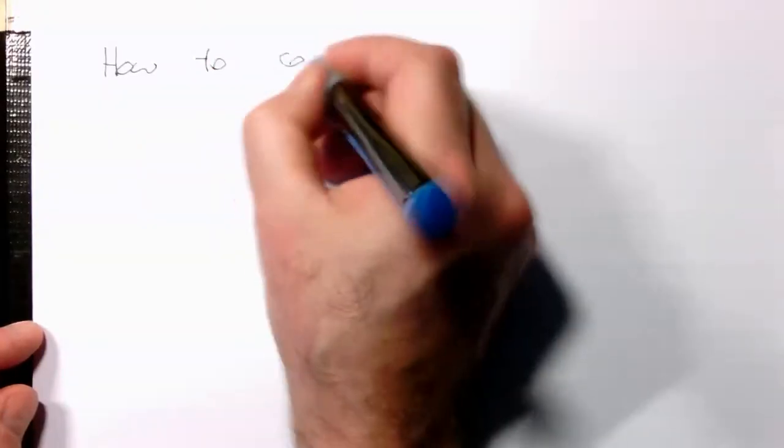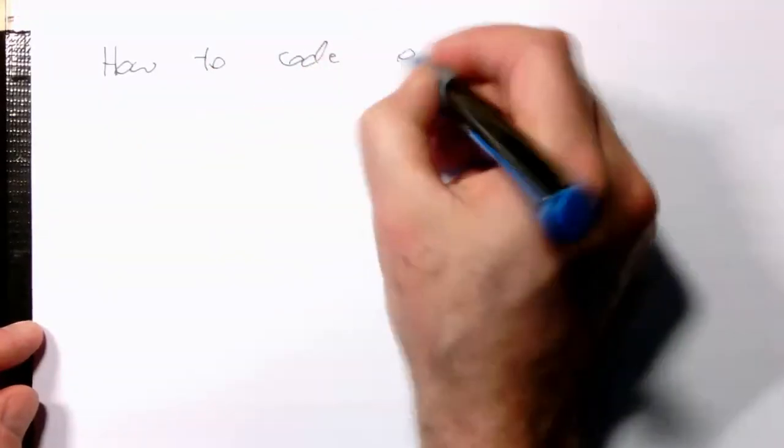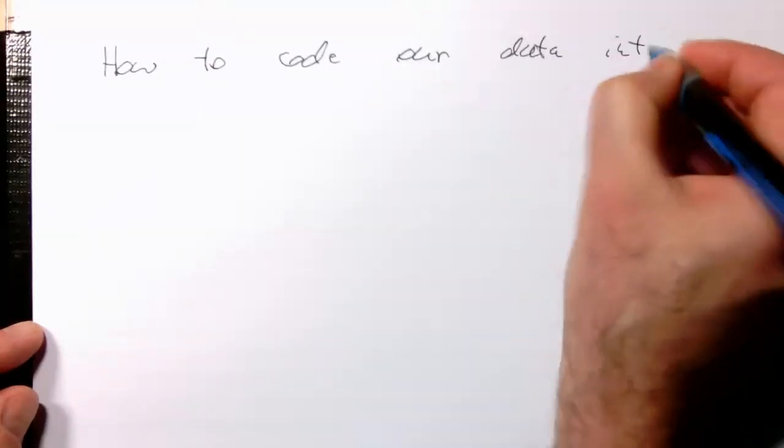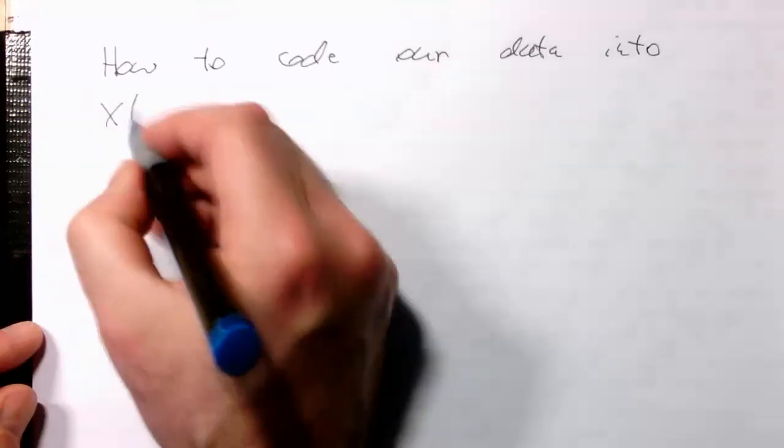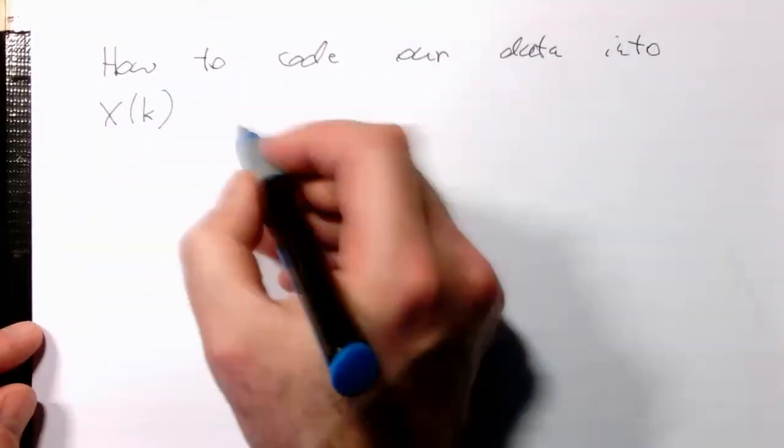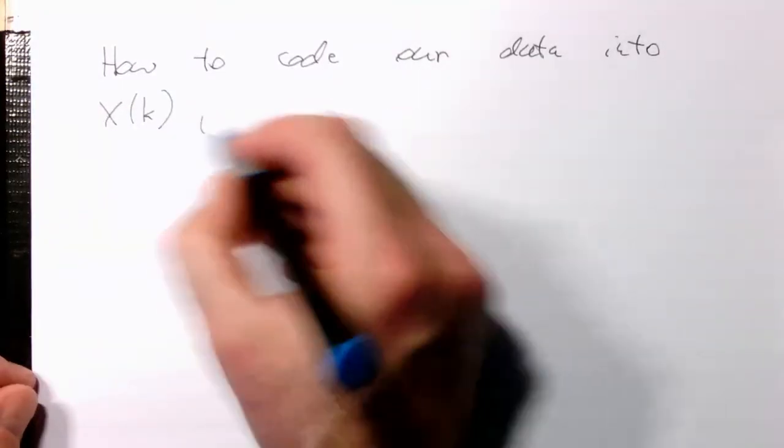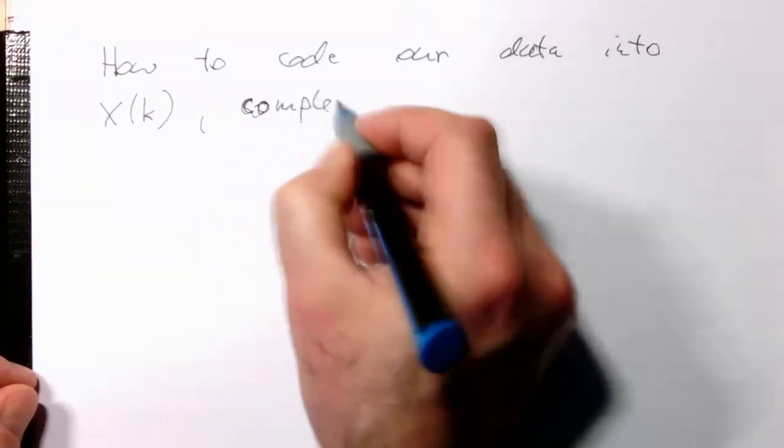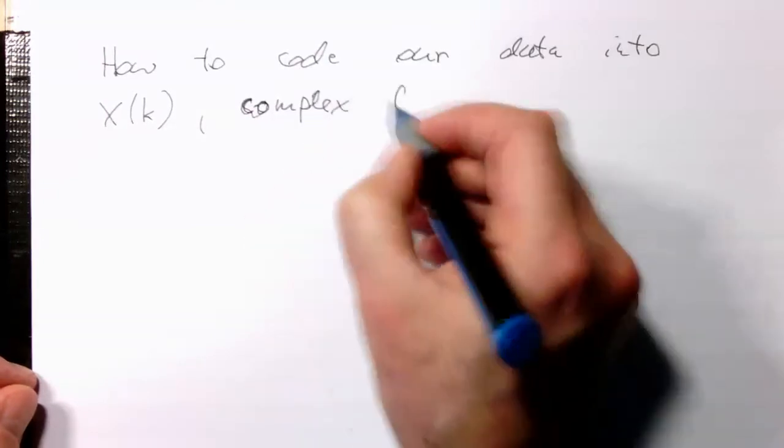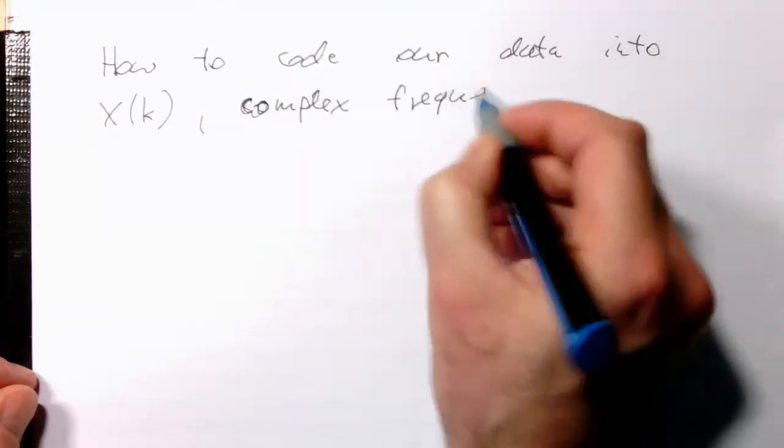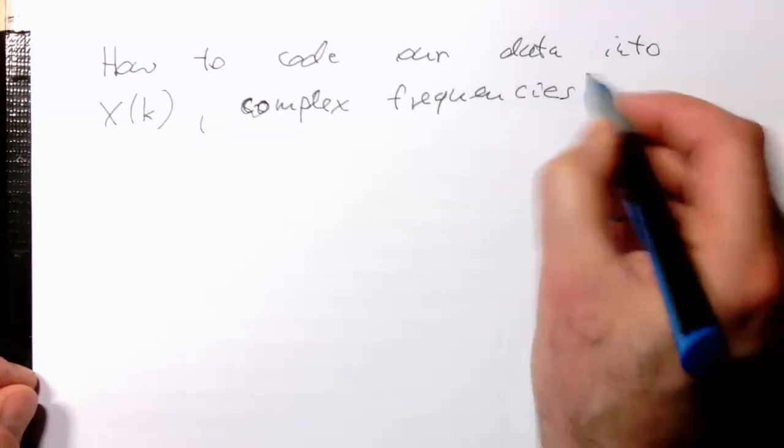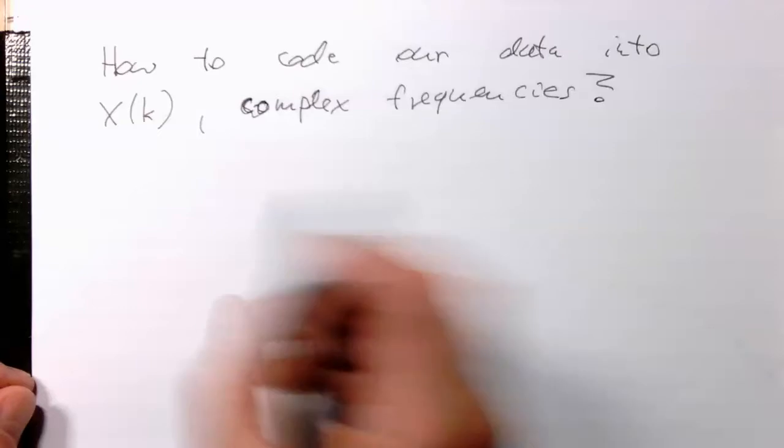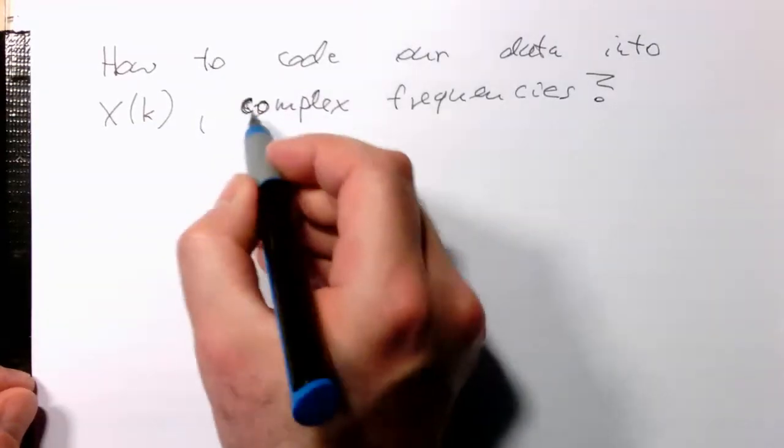How to code our data into our X(k), which were our complex frequencies. So how do we do that? And the idea should be quite familiar now.